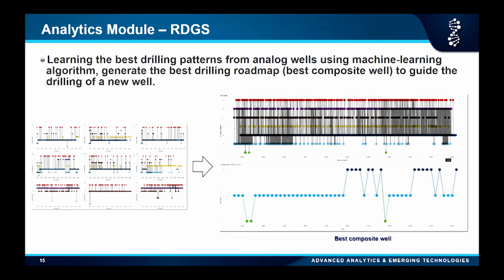The last module is like this: when you have a pad with multiple wells, say you've already drilled 9 wells and want to drill the 10th, this machine learning model learns the best drilling parameters from those 9 wells and composes a good parameter set for the new one. It's like driving from Anadarko to Houston several times — sometimes your miles per gallon is great, sometimes it's bad. The machine picks the best segments and composes an optimal roadmap to guide the new well drilling.